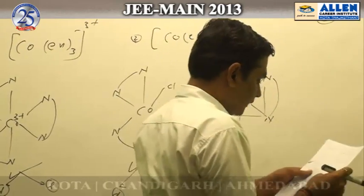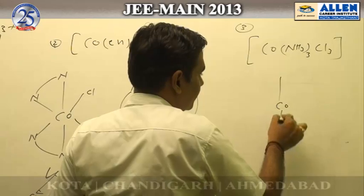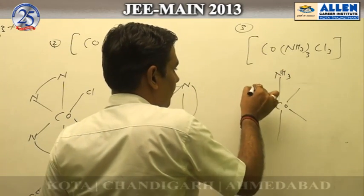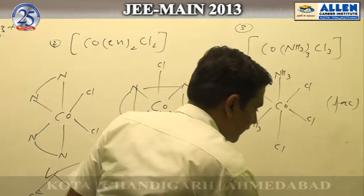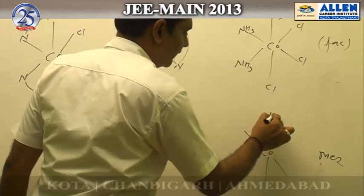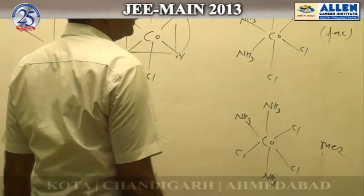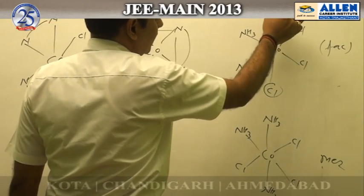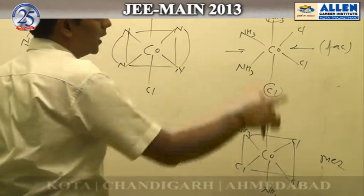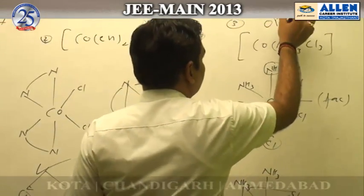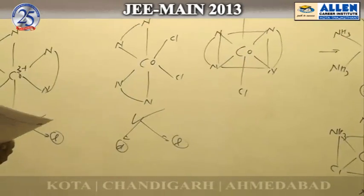Option C, [Co(NH₃)₃Cl₃], exists in two geometrical isomeric forms: facial (fac) and meridional (mer). Both forms have a plane of symmetry, so both are optically inactive. Therefore this complex does not show optical isomerism in any geometrical isomeric form.